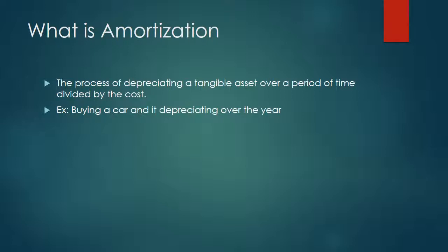What is amortization? Amortization is a process of depreciating a tangible asset over a period of time divided by the cost. A tangible asset is a physical asset that is bought or sold — something that can be touched. An example of amortization is buying a vehicle that depreciates in value over time.